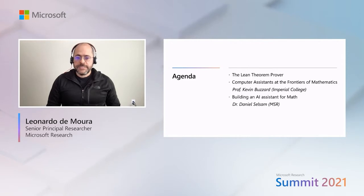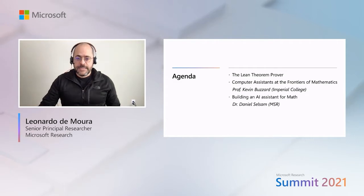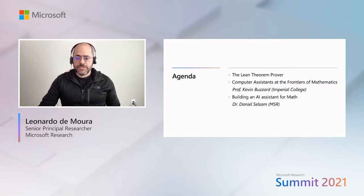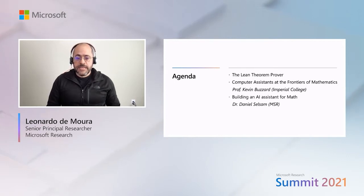Then Professor Kevin Buzzard will tell you how Lean is being used in the frontiers of mathematics. Professor Buzzard is a member of the Lean community and one of the developers of Mathlib, the Lean Mathematical Library. In the last part, Dr. Daniel Selson is going to tell you about ADA, the AI system for mathematics being built at Microsoft.